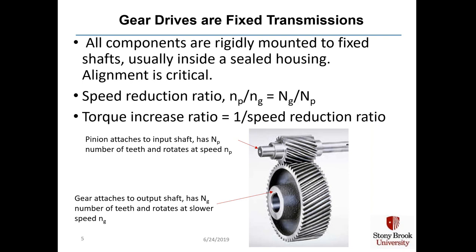Gear drives are fixed transmissions, which means that all components are rigidly mounted to fixed shafts, usually inside a sealed housing. Alignment down to a couple of thousandths of an inch is critical. The speed reduction ratio is calculated from the speed of the pinion, n sub P, divided by the speed of the gear, n sub G, and that's equal to capital N sub G — the number of teeth in the large gear — divided by capital N sub P, the number of teeth in the pinion.